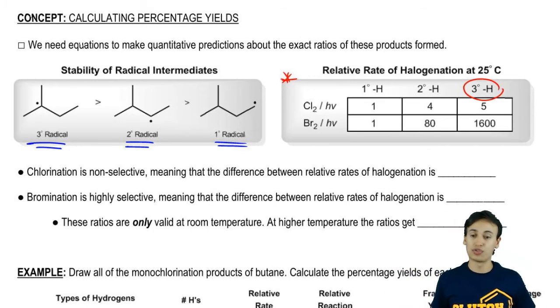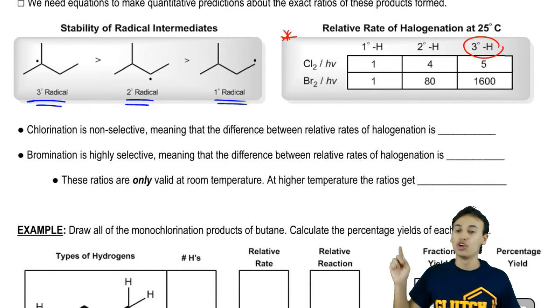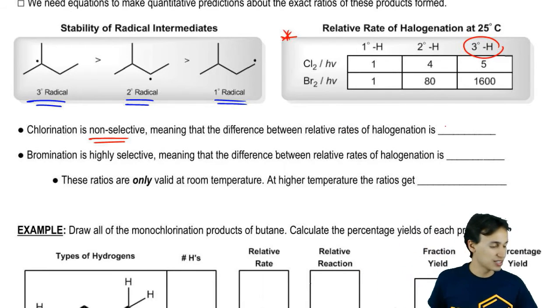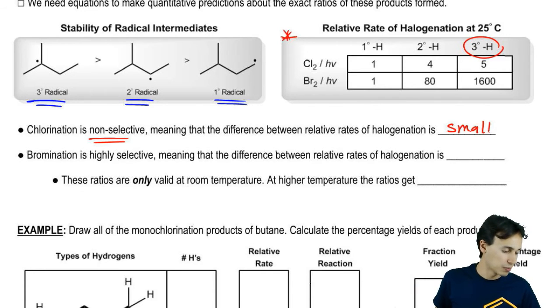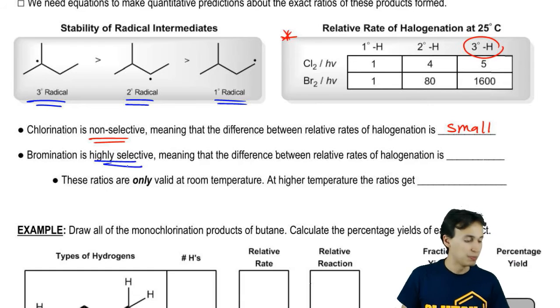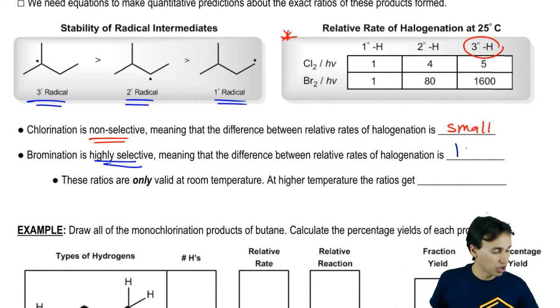Here we can go back to our definitions and we can state that chlorination is non-selective because the difference between the relative rates is very small. Whereas bromination is highly selective because the difference between the relative rates is very large.